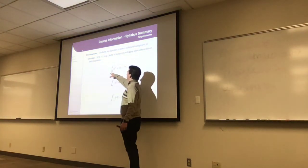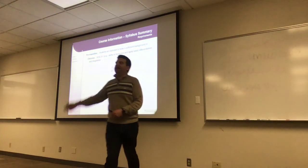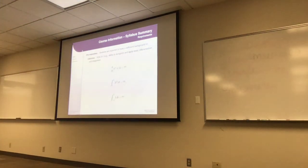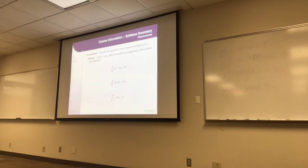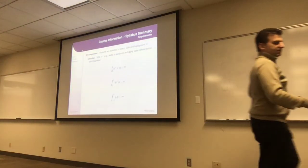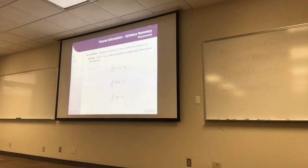For example, as a quick refresher: what's the derivative of t cubed plus 5? You drop the constant, bring the exponent to the front, and reduce the power — so you get 3t squared. The answer is 3t squared.